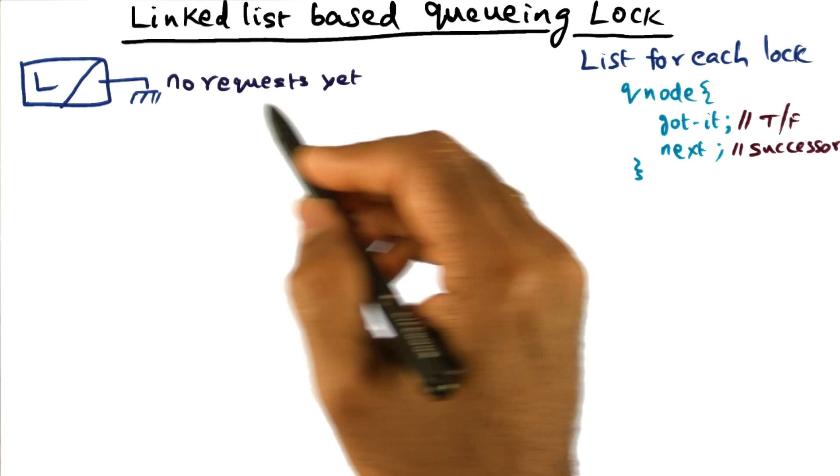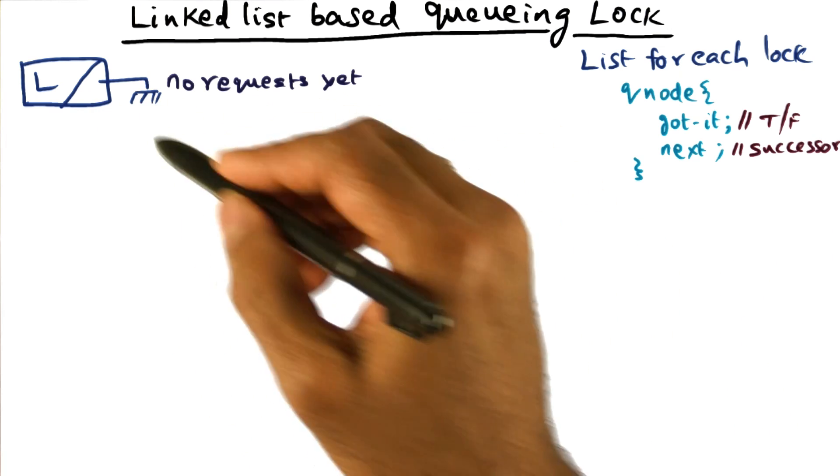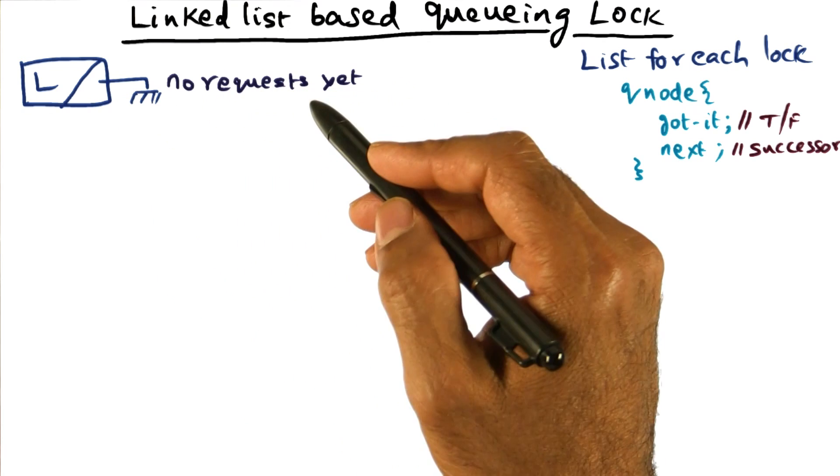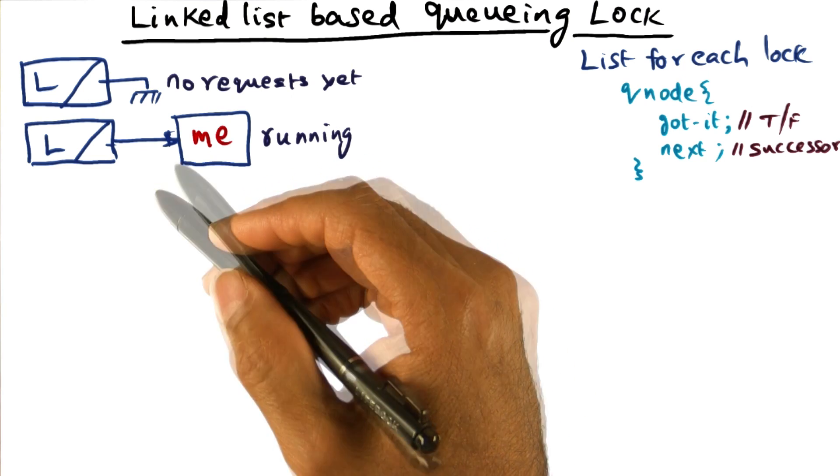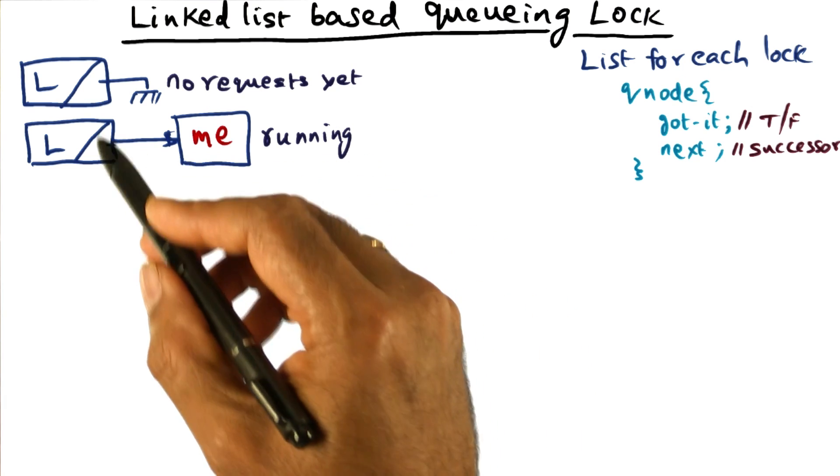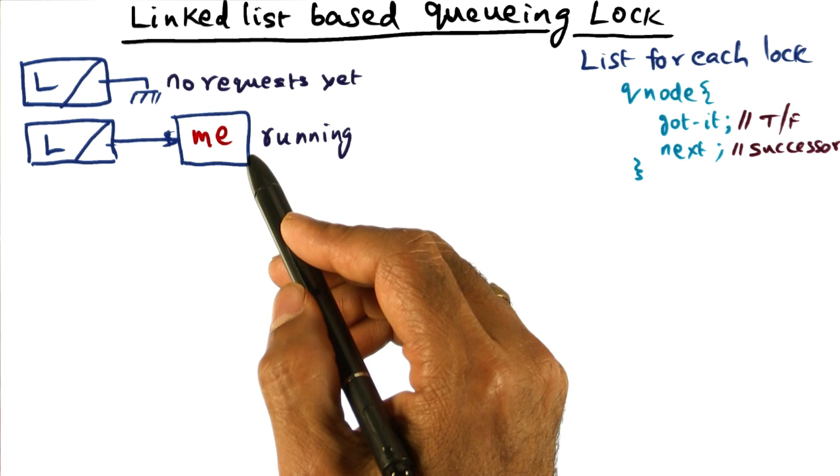As I said before, we initialize the lock to nil, indicating there are no requests yet. Let's say that I come along and request the lock. I don't have to wait because currently there's nobody in the queue, and therefore I get the lock right away.